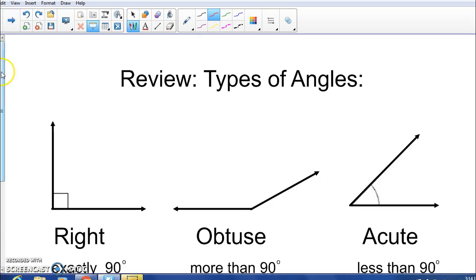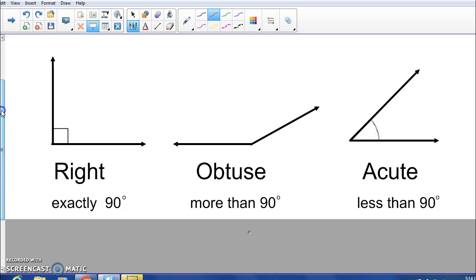First, let's talk about different types of angles. This angle here is called a right angle. It kind of looks like an L. Those are exactly 90 degrees, and the way you tell that is a box just like this one has here.